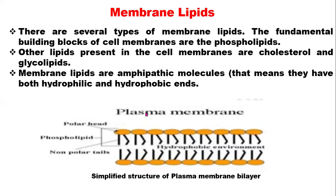Now let's look at the lipids found in membranes. Membranes are composed of lipids and proteins. There are several types of membrane lipids. The fundamental building block of the cell membrane is phospholipids — the most abundant lipids found in the cell membrane. Phospholipids are a class of lipids that contain phosphoric acid in addition to the alcohol and other components found in normal triacylglycerol. For triacylglycerol, fatty acids are attached at positions one, two, and three of glycerol.